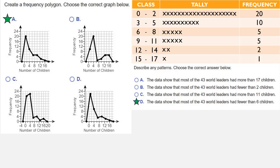So the correct answer here is choice D. The data show that most of the 43 world leaders have fewer than 6 children. Fewer than 6 children would be from 0 to 5, which is 30 out of the 43. And that's your answer.